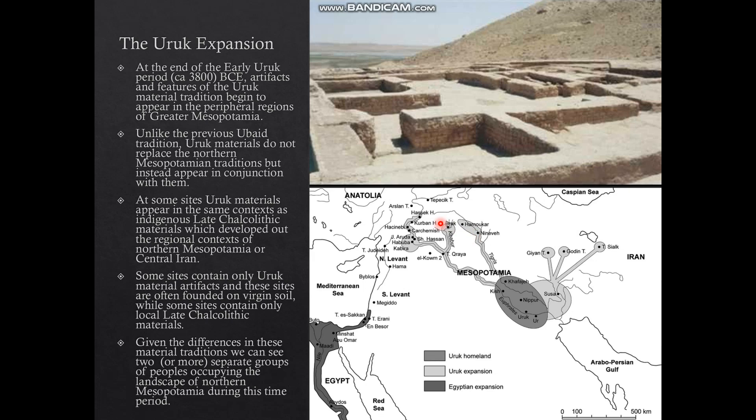Unlike the Ubaid period, where local populations adapted Ubaid material styles, Uruk materials don't replace those of the northern Mesopotamian tradition, but rather appear in conjunction with them. We do see sites founded for the first time during the Uruk period, on virgin soil, built with Mesopotamian-style architecture containing southern Mesopotamian-style goods. At some other sites, Uruk materials appear in the same context as indigenous Late Chalcolithic local materials, telling us that groups of people were living together, occupying the same space, but using different material traditions — likely reflecting different cultural identities.